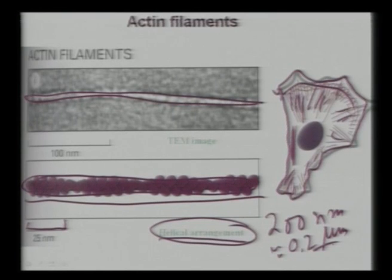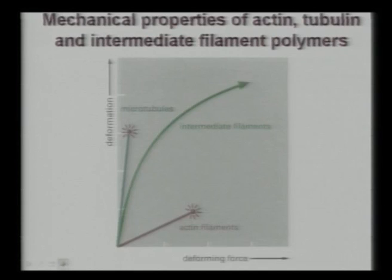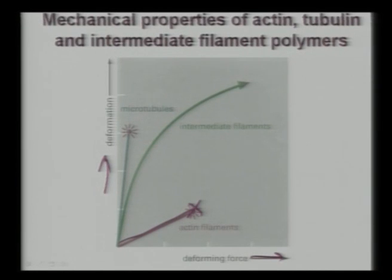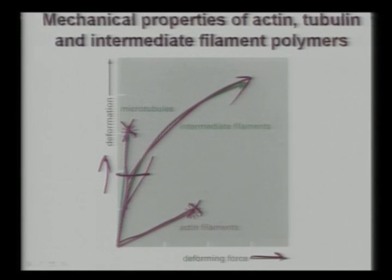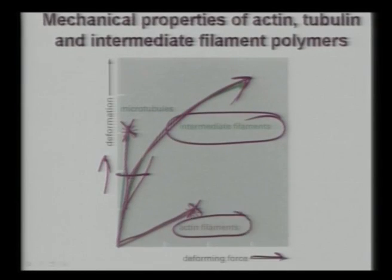Mechanical properties of the cytoskeleton components: actin filaments and microtubules show linear brittle behavior — classical brittle fracture. Intermediate filaments show initially linear then non-linear behavior with greater strain to fracture. The lecture will stop here and continue in the next lecture with differential properties.